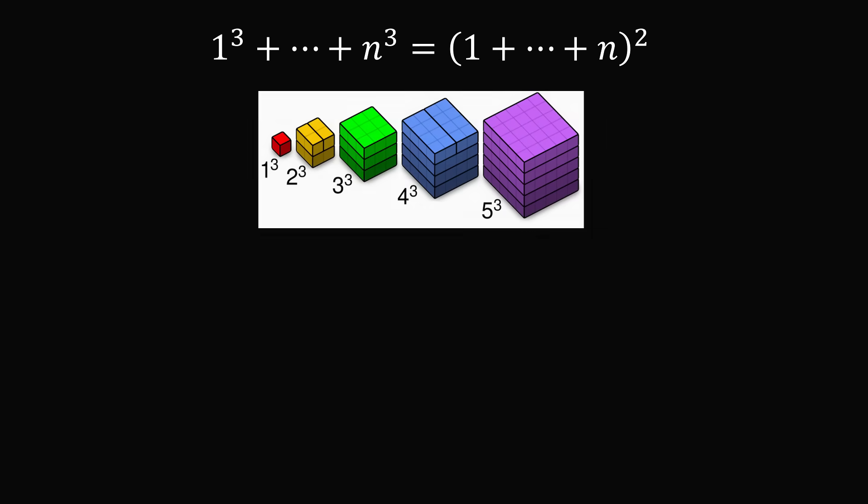Let's start out with the sum of the first n cubes. Imagine we have a red block that's 1 by 1 by 1, this will be 1 cubed. Now let's make a yellow cube that is formed by 2 by 2 by 2 of these individual blocks. Let's form a green cube that's 3 by 3 by 3, a blue cube that's 4 by 4 by 4, and a purple cube that's 5 by 5 by 5.